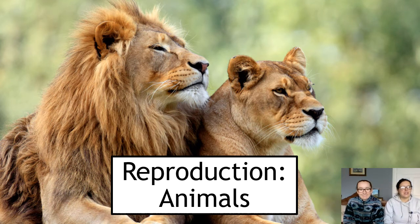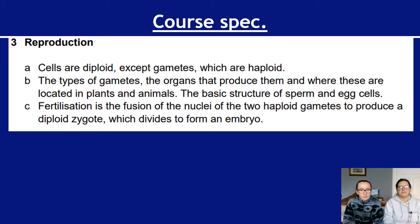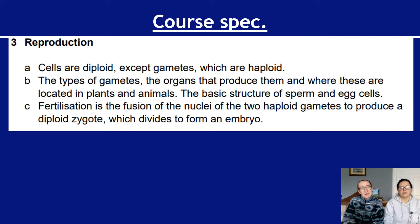We are on to key area three of unit two of National Five Biology, called structure — but it's about reproduction, basically reproduction in both plants and animals. This video is focusing on animals, but we'll give you a general introduction to what the whole key area looks like. The next video will cover all of the plant stuff.